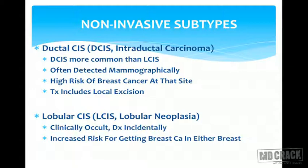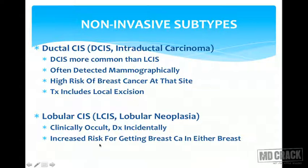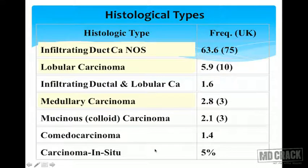Non-invasive subtypes include ductal carcinoma in situ (DCIS), where carcinoma is limited within the duct — also called intraductal carcinoma. DCIS is more common than lobular carcinoma in situ (LCIS) and is often detected by mammography. If untreated, DCIS invariably progresses to invasive breast cancer. Treatment is simple local excision. LCIS is quite rare, may remain clinically occult, and is often an incidental finding; however, it also increases the risk of breast carcinoma in either breast.